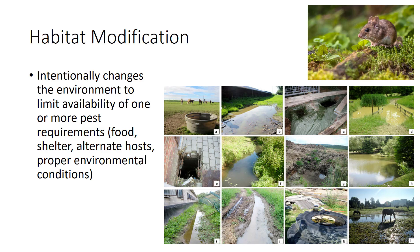Pest problems occur when conditions essential for survival — that is, food, shelter, alternate hosts, and proper environmental conditions — are favorable. Habitat modification intentionally changes the environment to limit availability of one or more of these requirements, thus reducing the suitability of the host to pest populations. Habitat modification is very important in vertebrate control. For example, weeds, ground cover, and litter provide food and cover for field mice. Eliminating these areas in and around crops, turf, and landscape in cultivated areas reduces the potential of these areas to support these and other vertebrate pests. Habitat modification is effective in limiting numerous insect pests as well. For example, draining areas containing standing water reduces breeding sites for mosquitoes and is an important management technique.